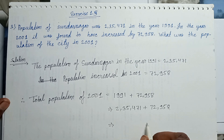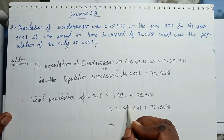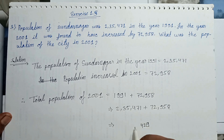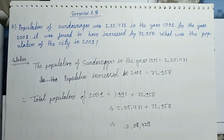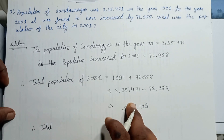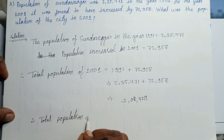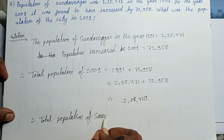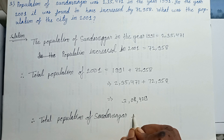Calculating: 1 plus 8 is 9, 7 plus 5 is 12 carry 1, 4 plus 9 plus 1 is 14 carry 1, 5 plus 2 plus 1 is 8, 3 plus 7 is 10 carry 1, 2 plus 0 plus 1 is 3. Total population of Sundar Nagar in 2001.